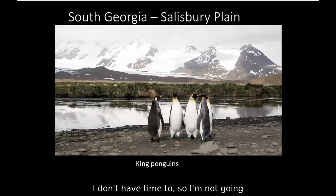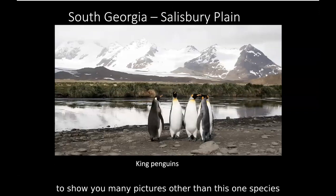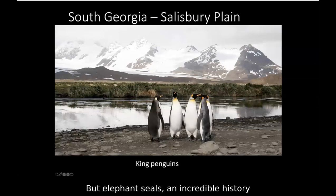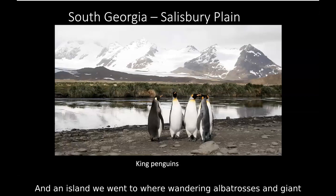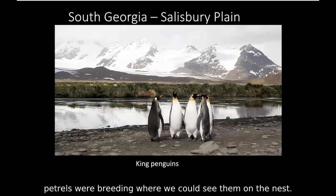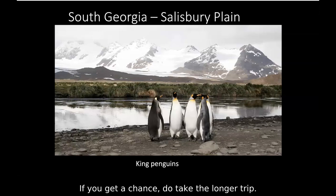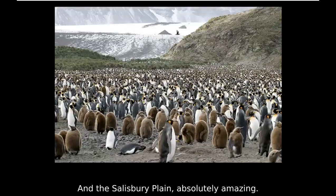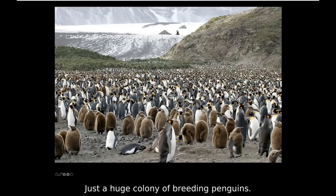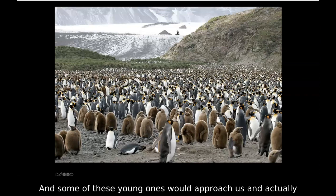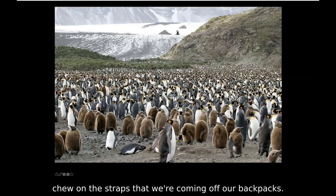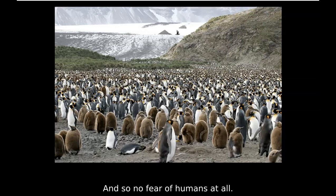We spent three days in South Georgia — elephant seals, incredible explorer history, and an island where wandering albatrosses and giant petrels were breeding so we could see them on their nests. Highly recommended if you get a chance — do take the longer trip. We saw king penguins, which are very similar in appearance to emperor penguins, and the Salisbury Plain was absolutely amazing — just a huge colony of breeding penguins. No fear of humans here; young ones would approach us and actually chew on the straps coming off our backpacks.